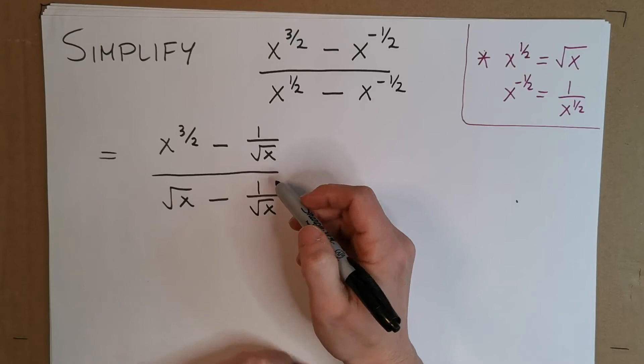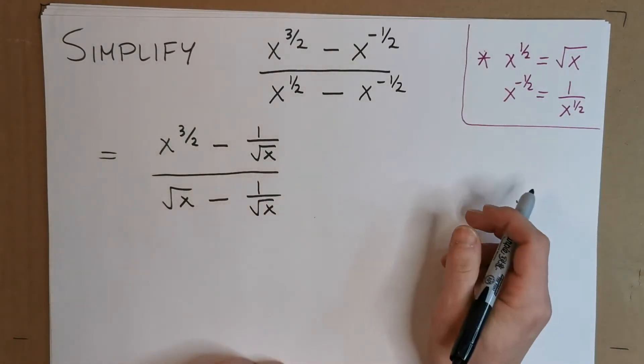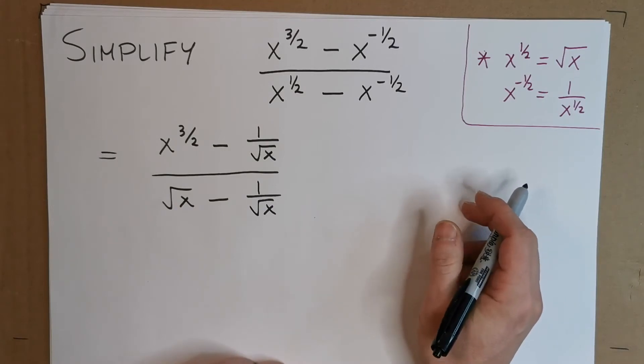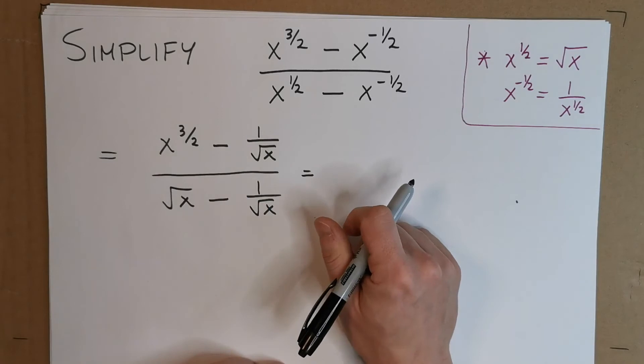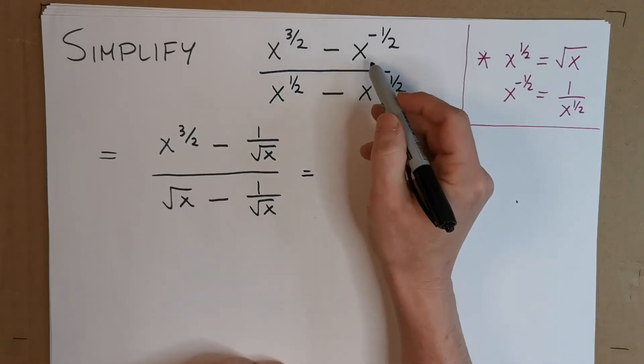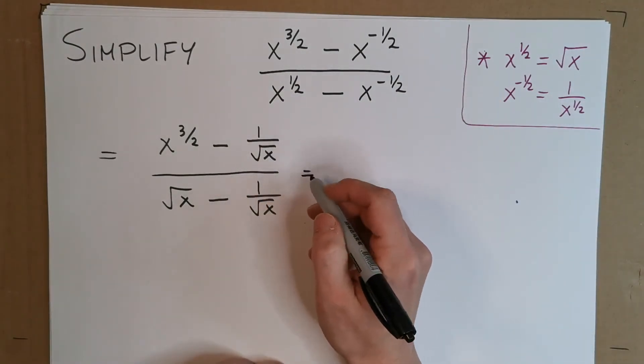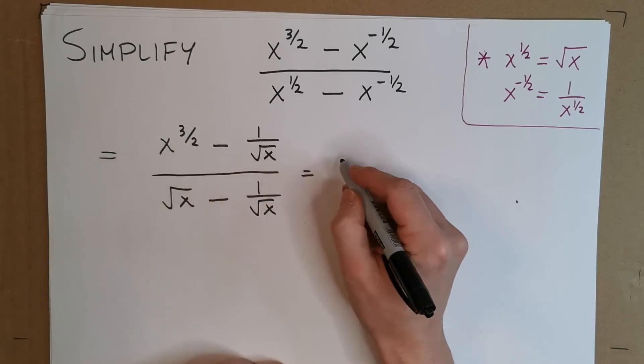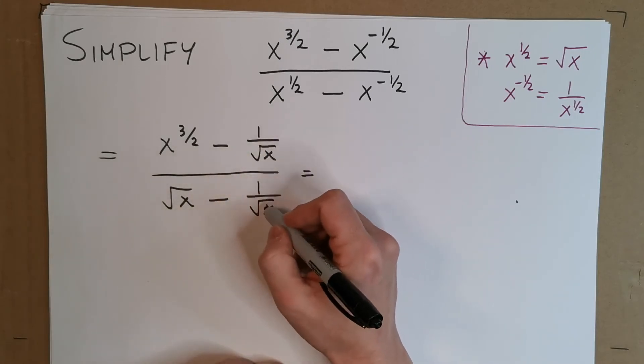I think now for some people if they see this, they'll say, oh ok, I just want to get rid of this denominator here. Let's multiply everything by square root of x. Yep, that's great. So we'll do that, and that gets rid of our fractions here. Now equally you could have just multiplied everything by x to the half up here, but look, it doesn't matter. This is just an easy way to see it a bit better, I think. So let's multiply everything by square root of x. So when we do that, we'll get rid of these denominators here.